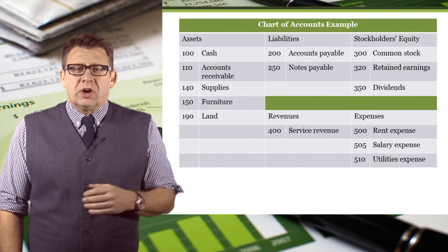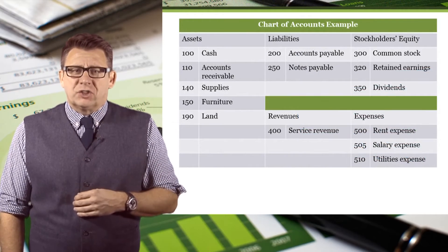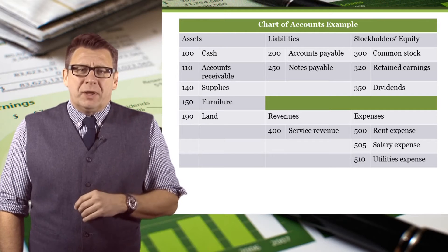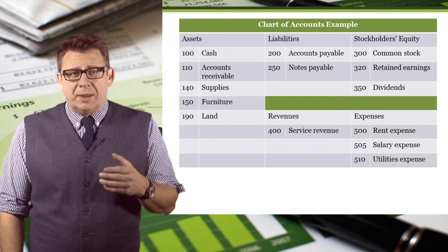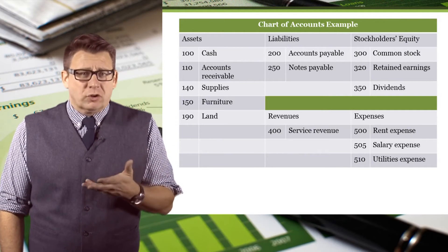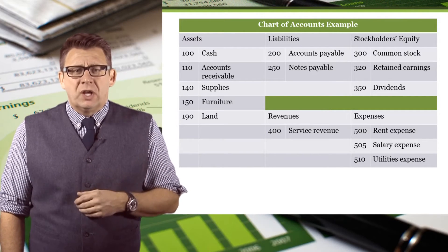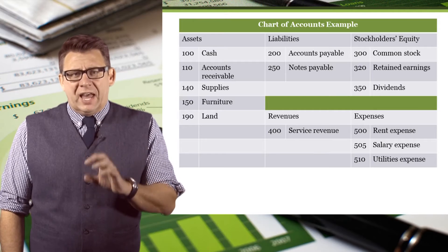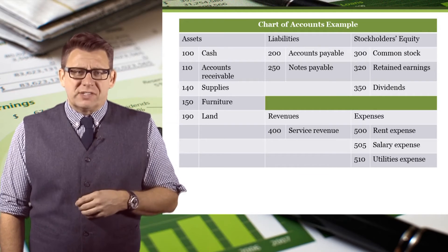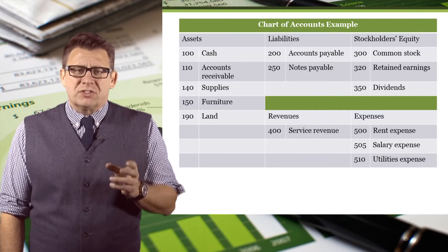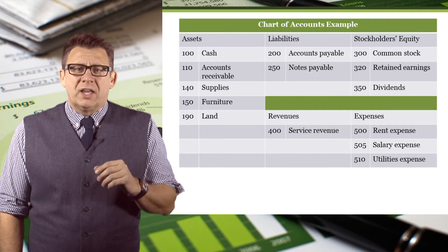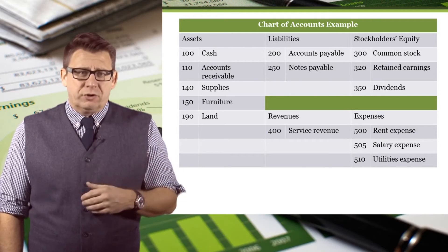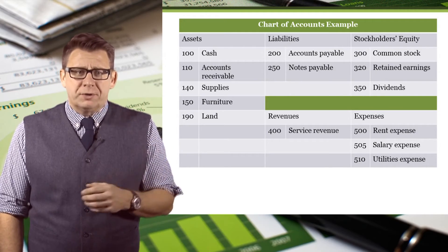Here is a short example of a chart of accounts. In academia, we identify accounts by their names like cash or service revenue. But in real life, in an accounting information system, accounts are identified by an assigned account number like 100 or 400.